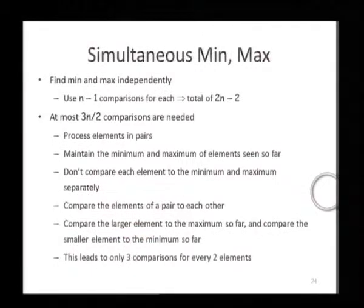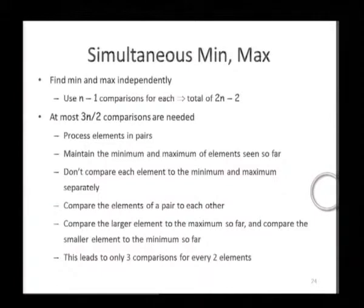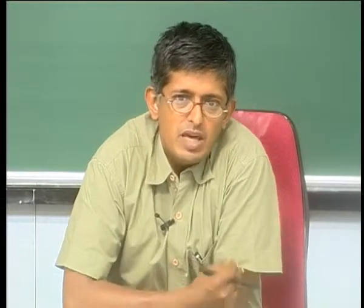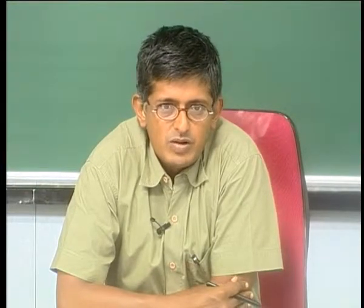It is a very interesting exercise to ask if one can compute both the minimum and the maximum elements in the array efficiently, but more importantly in a simultaneous fashion. That is, we want the algorithm at every point of time to keep estimates of both the min and the max in the array, update both these estimates, and finally conclude that min and the max have been found.